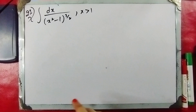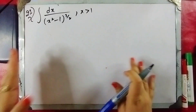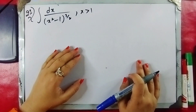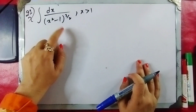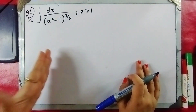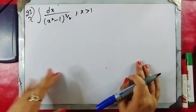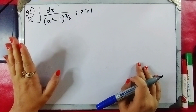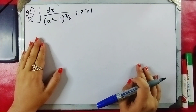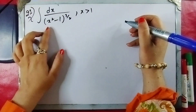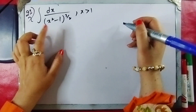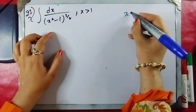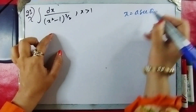We have question 21 with the condition that x is greater than 1. If x equals 1, then 1 minus 1 is 0, giving an indeterminate form. Looking at the function, we have x squared minus a squared, and here we use the substitution with secant of theta.